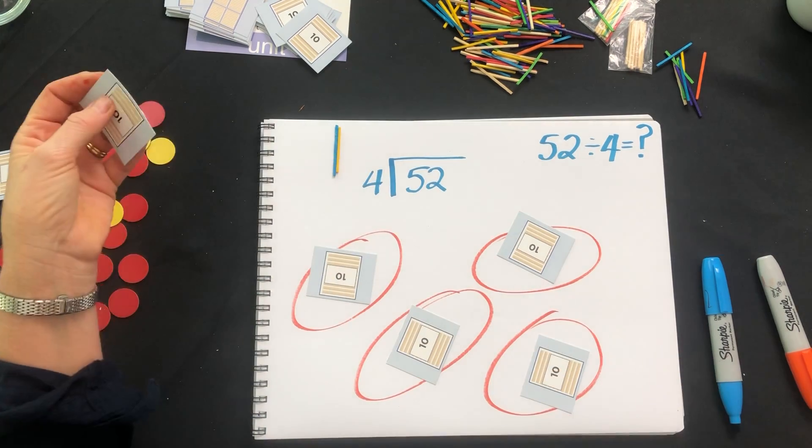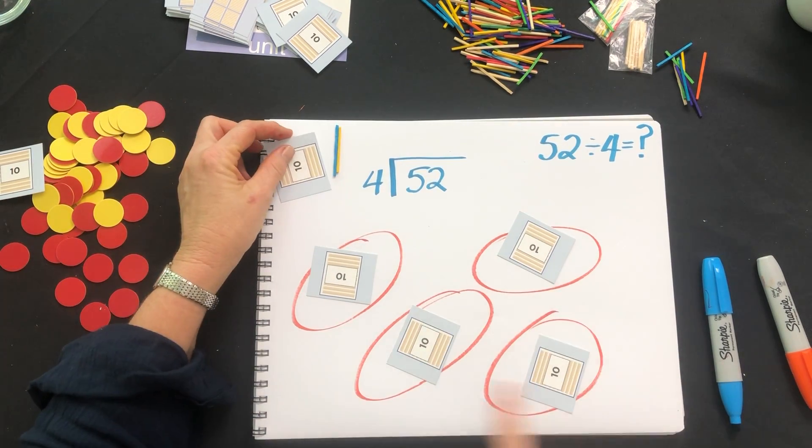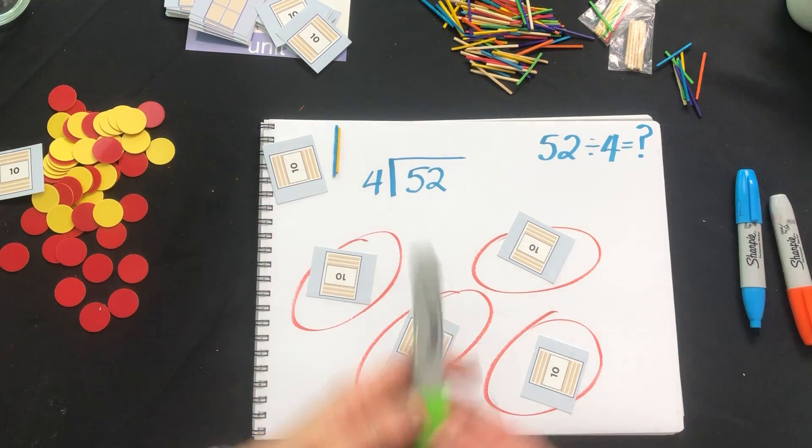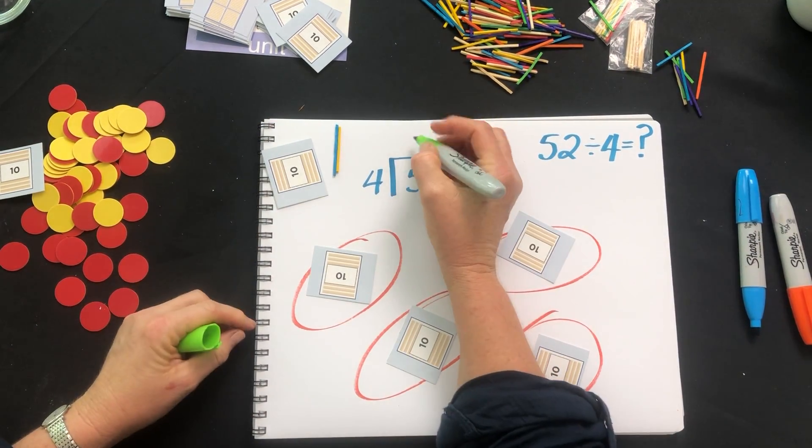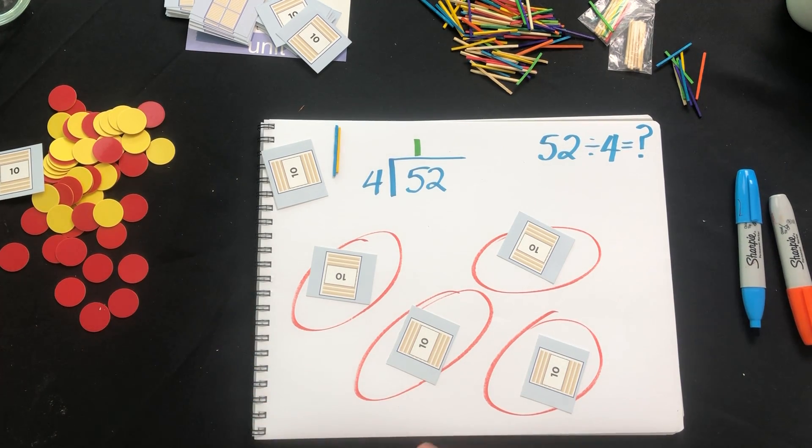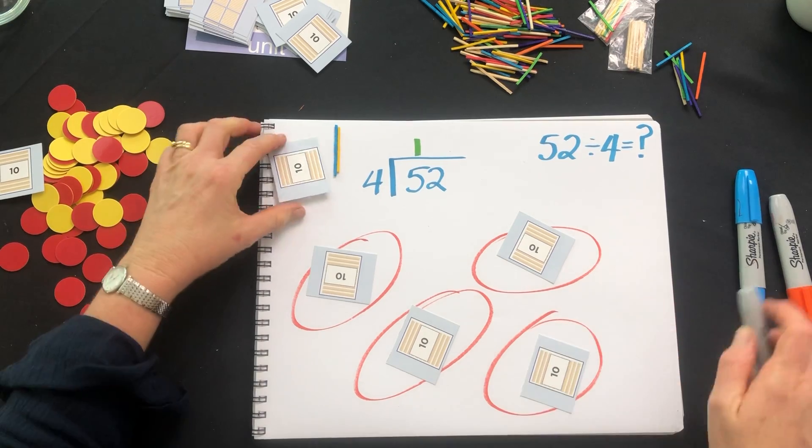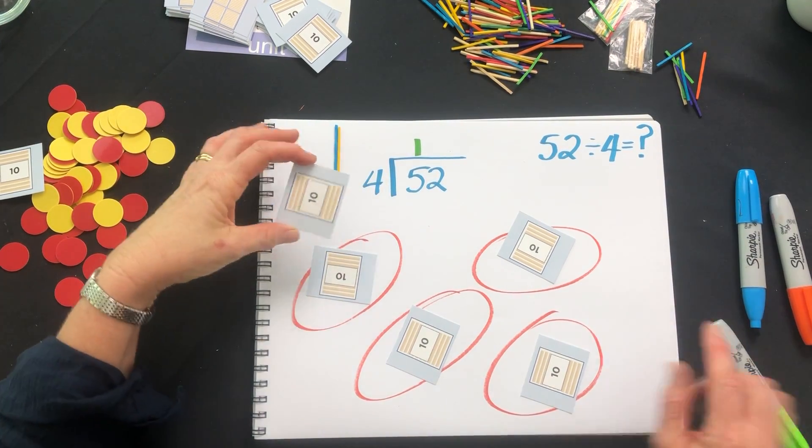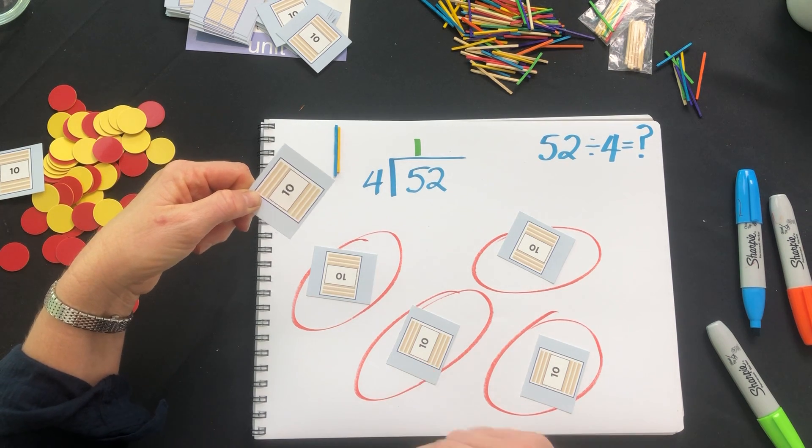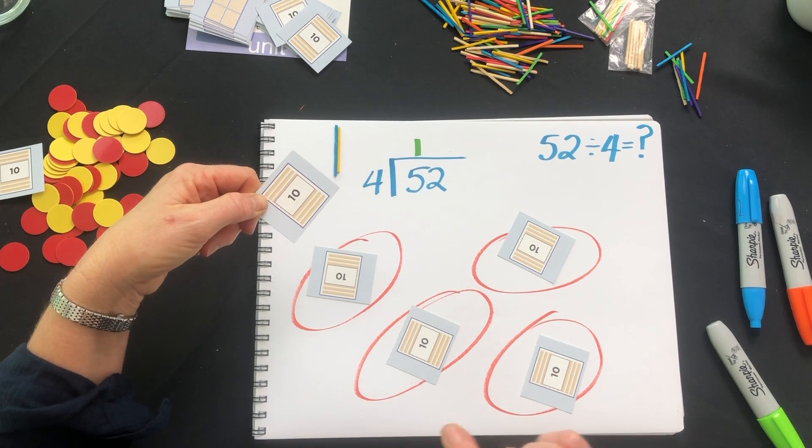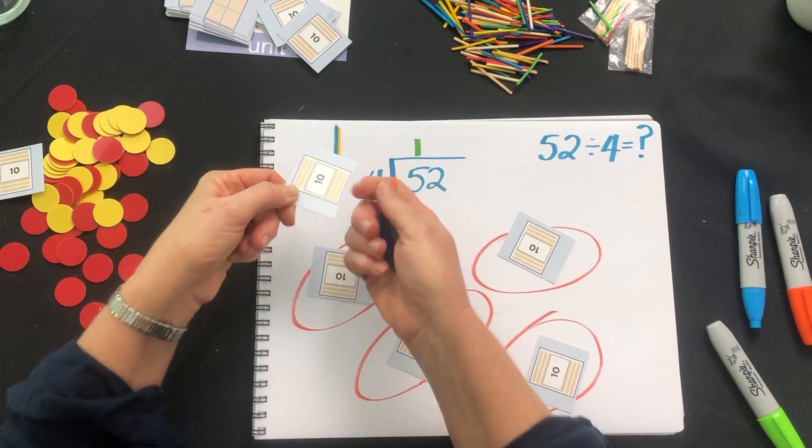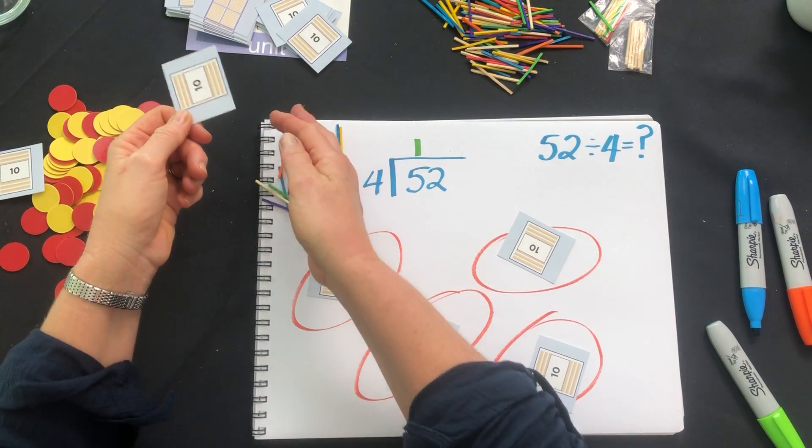We can do that to see that we've been able to put one ten in each group and we're left with one ten. Now we can't split this ten up as it exists at the moment as one card amongst the four groups. What we have to do is change it into ones. So I've got ten ones here and I physically swap the ten for ten.